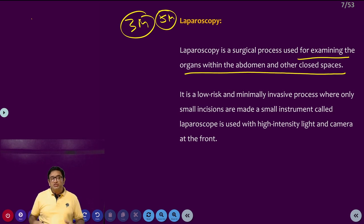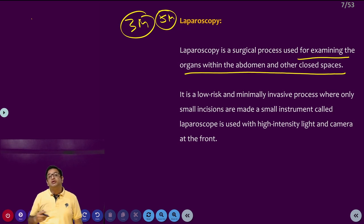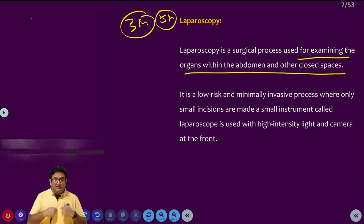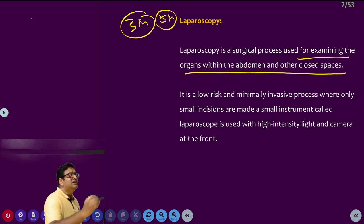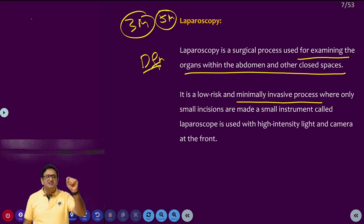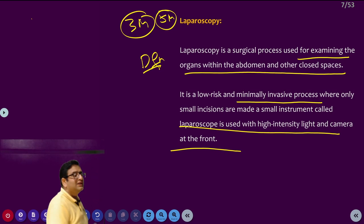To examine organs within the abdomen or any closed space, usually a camera is inserted into the abdomen. It is a low-risk and minimally invasive process where only small incisions are made, and a small instrument called a laparoscope is used with high-intensity light and a camera in the front.